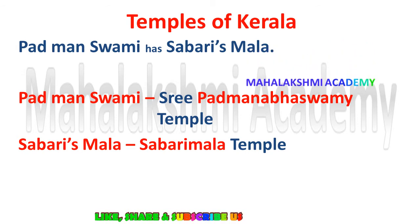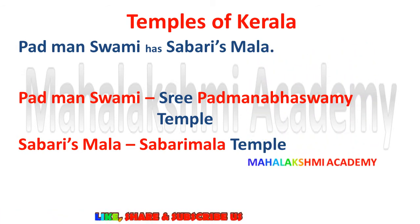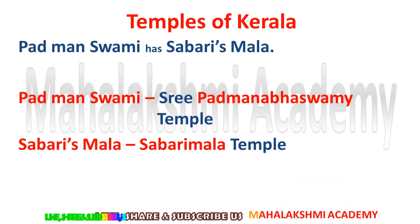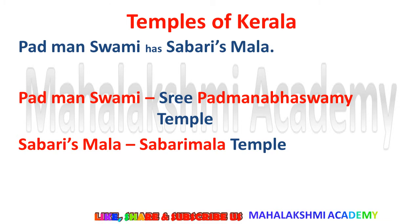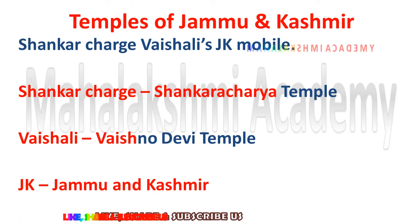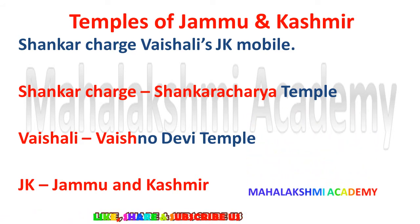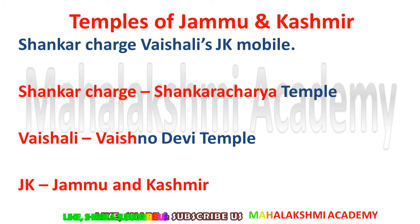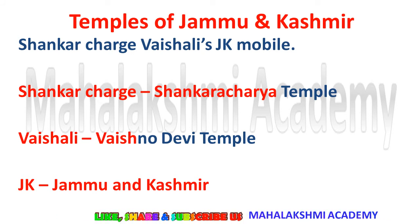Temples of Kerala — 'Padmanswami has Sabrimala.' Padmanswami is for Shri Padmanabhaswamy temple, and Shabrimala is for Sabarimala temple. So there are two temples situated in Kerala. Temples of Jammu and Kashmir — the trick is 'Shankar charge Veshaali's JK mobile.' Shankar charge is for Shankaracharya temple. Veshaali is for Vaishno Devi temple. And JK reminds you the trick is related to Jammu and Kashmir.